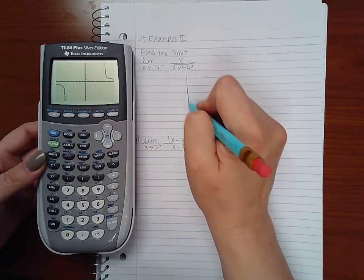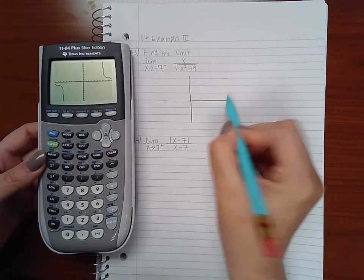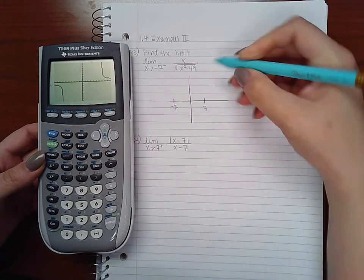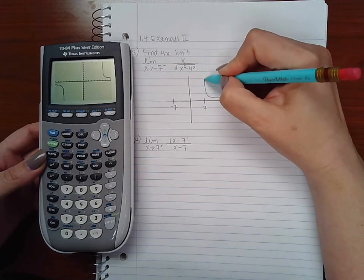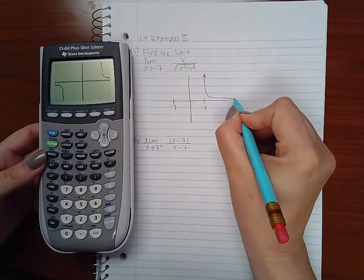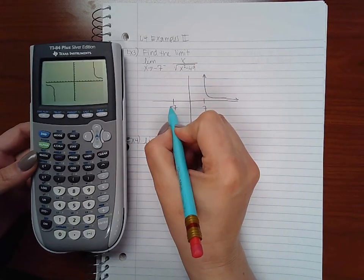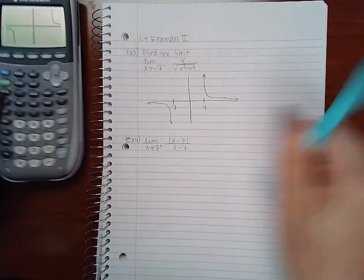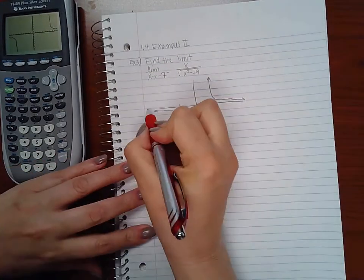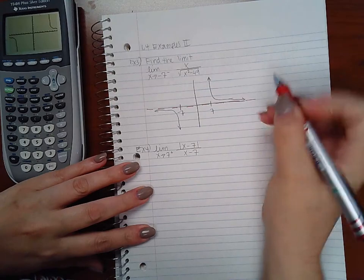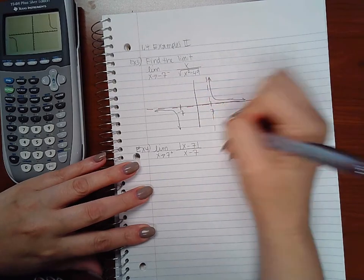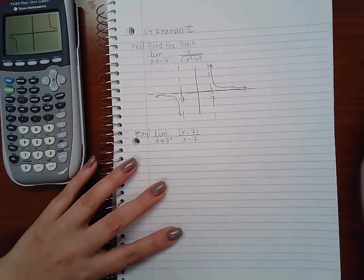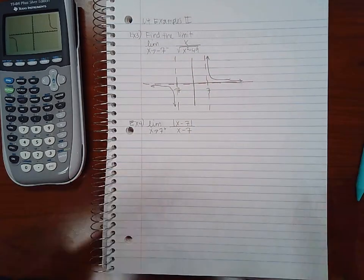So I'm going to go back to zoom standard. Basically I have the graph which looks like this. So here's negative 7, here's positive 7. This part of the graph is going up and then that way, and this part of the graph is going downward. I basically have a horizontal asymptote here and I have a vertical asymptote at 7 and a vertical asymptote at negative 7 and nothing in the middle.